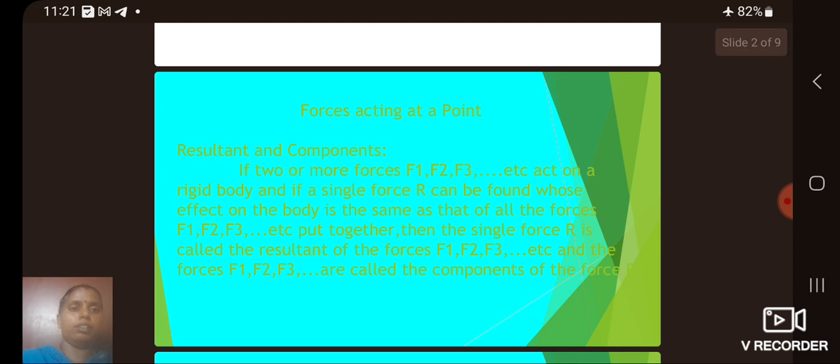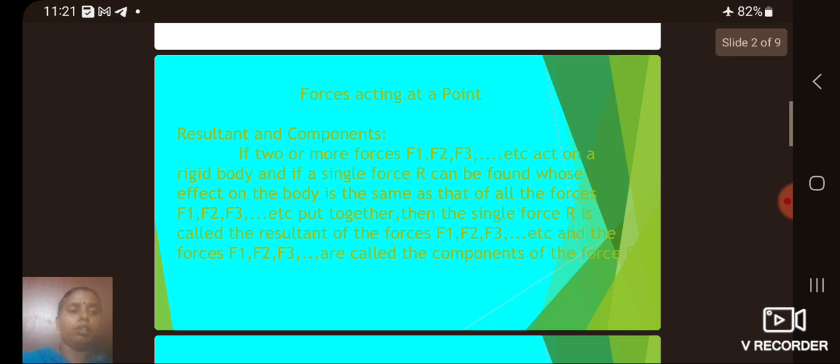Then next we see the forces acting at a point, resultant and components. If two or more forces F1, F2, F3 etc act on a rigid body and if a single force R can be found whose effect on the body is the same as that of all the forces F1, F2, F3 etc put together, then the single force R is called the resultant of the forces F1, F2, F3 etc and the forces F1, F2 etc are called the components of the forces.